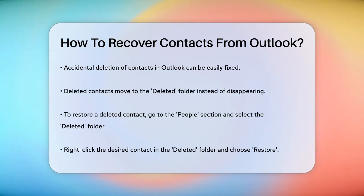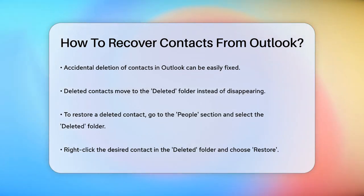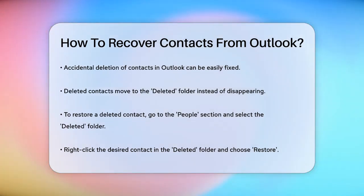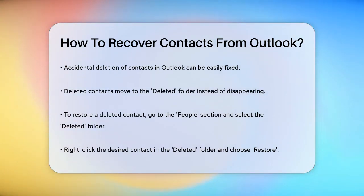First, let's start with the simplest method. When you delete a contact, it doesn't disappear immediately — it gets moved to the Deleted folder. To find it, go to the navigation pane in Outlook, select the People button, and then click on the Deleted folder. Here you'll see all your deleted contacts. Find the one you want to restore, right-click on it, and select Restore. This will move the contact back to its original folder, or your default contacts folder if the original folder no longer exists.